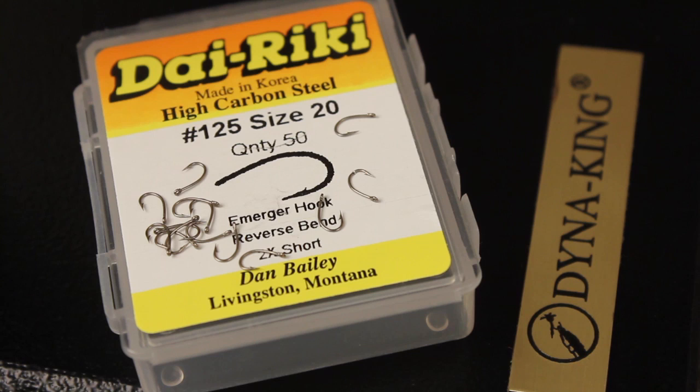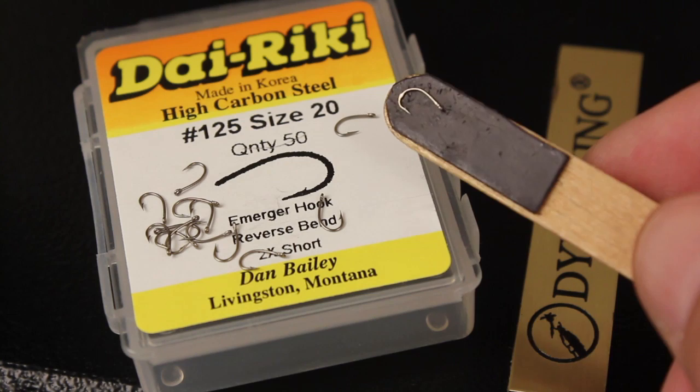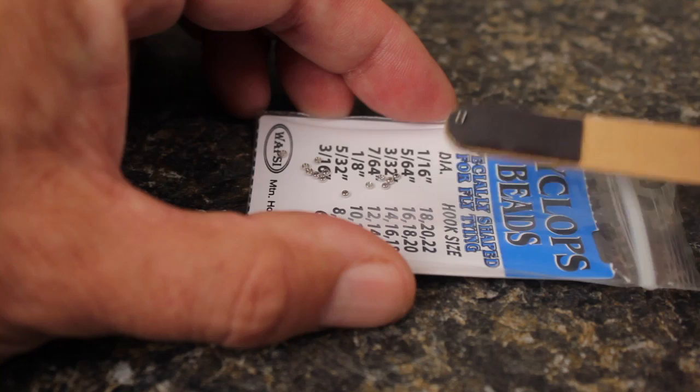Zebra midges are most commonly tied on hooks size 16 and smaller. Here, I'm going to use a Direki No. 125 Remerger hook in size 20. I'm using a 16th inch silver cyclops bead because it complements the hook well.